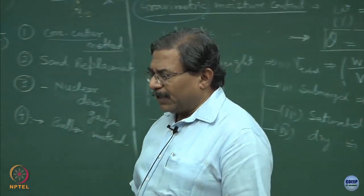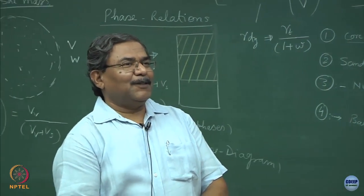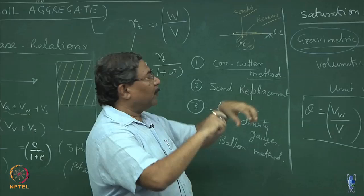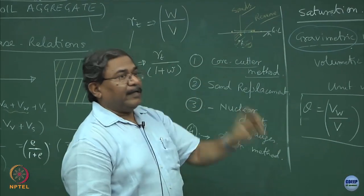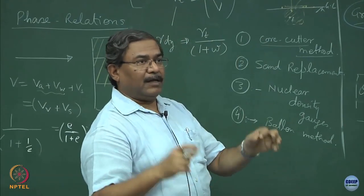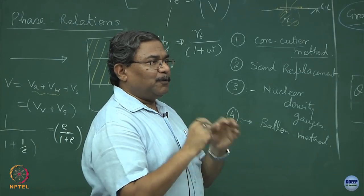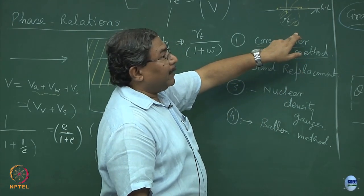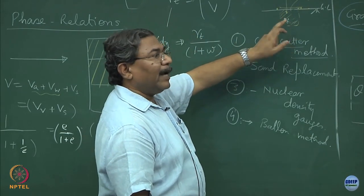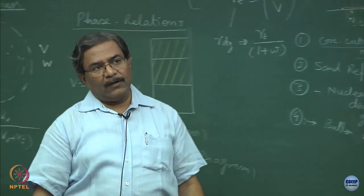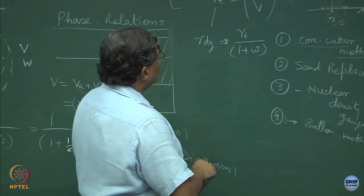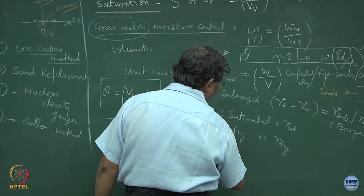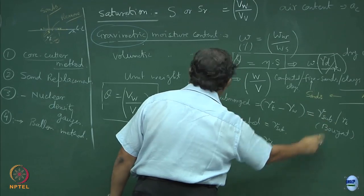Gamma T and gamma dry are related to each other. If I normalize gamma T with (1 + moisture content w), this equals gamma dry. In the field, it is very difficult to take out an intact core sample. So what we do is measure the volume and weigh the soil. The relationship: gamma dry = gamma T / (1 + w).